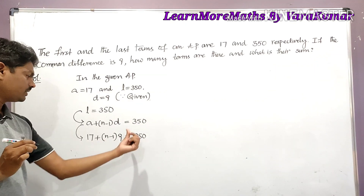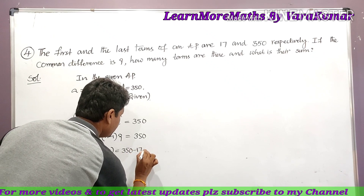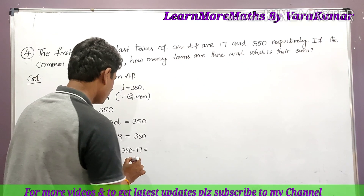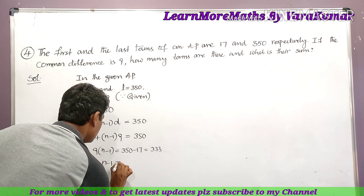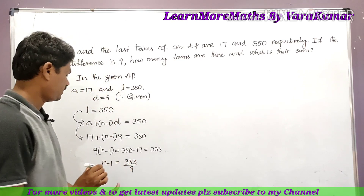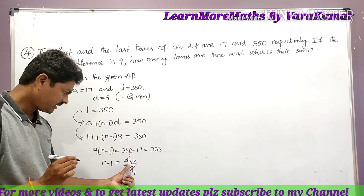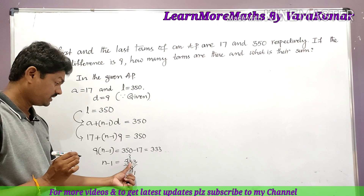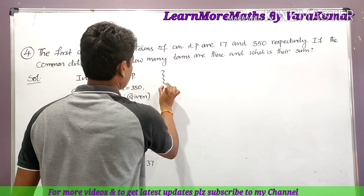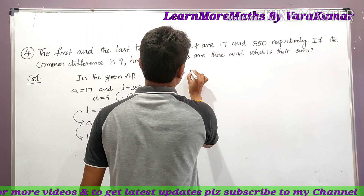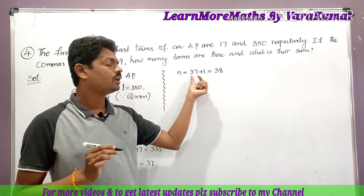Taking 17 to the right side: 9×(n−1) = 350 − 17 = 333. Dividing both sides by 9: n−1 = 333/9 = 37. Taking −1 to the right side: n = 37 + 1 = 38. Therefore, n = 38.